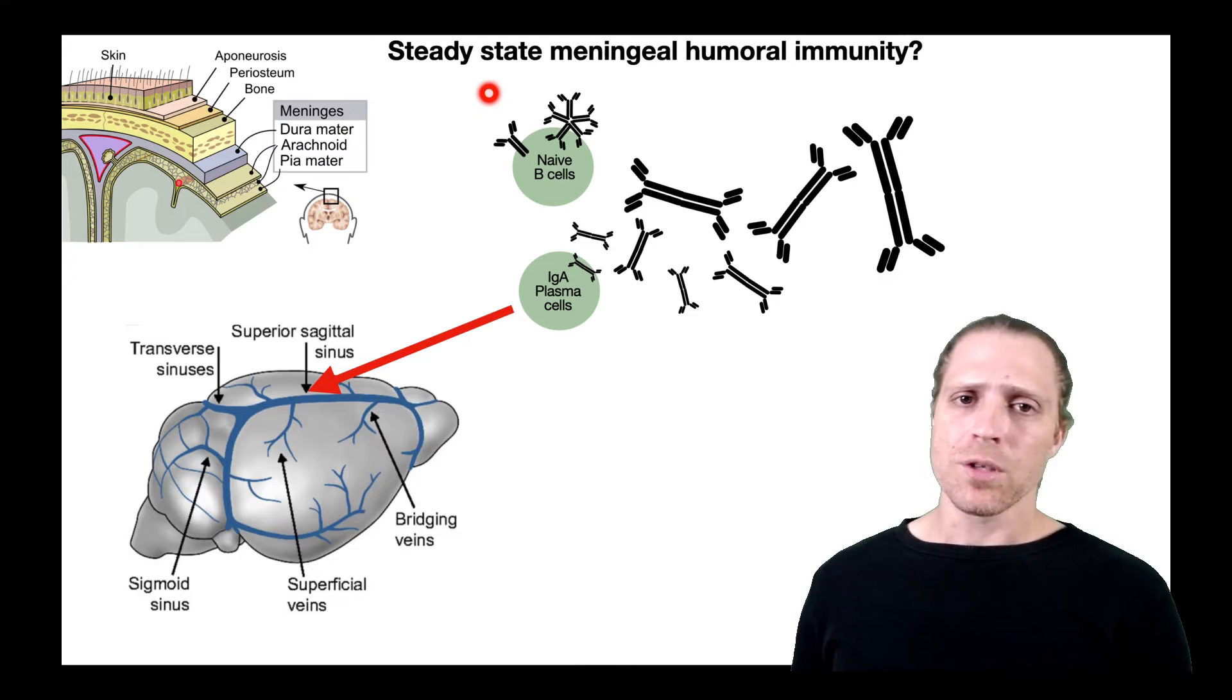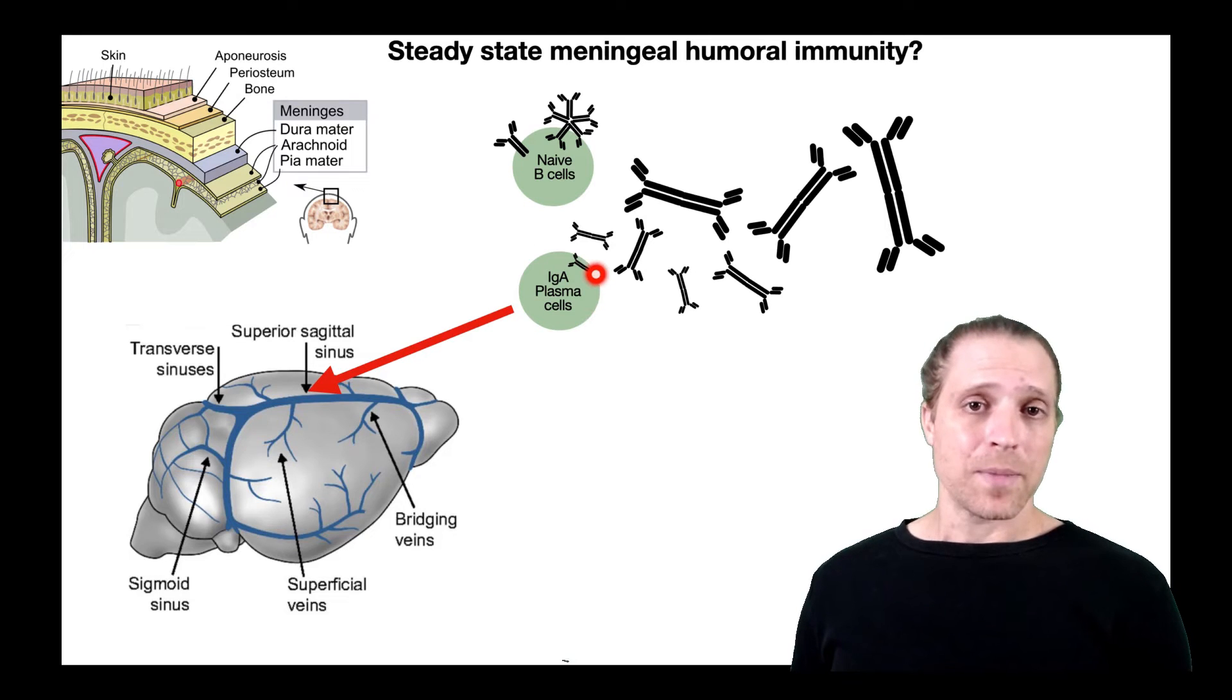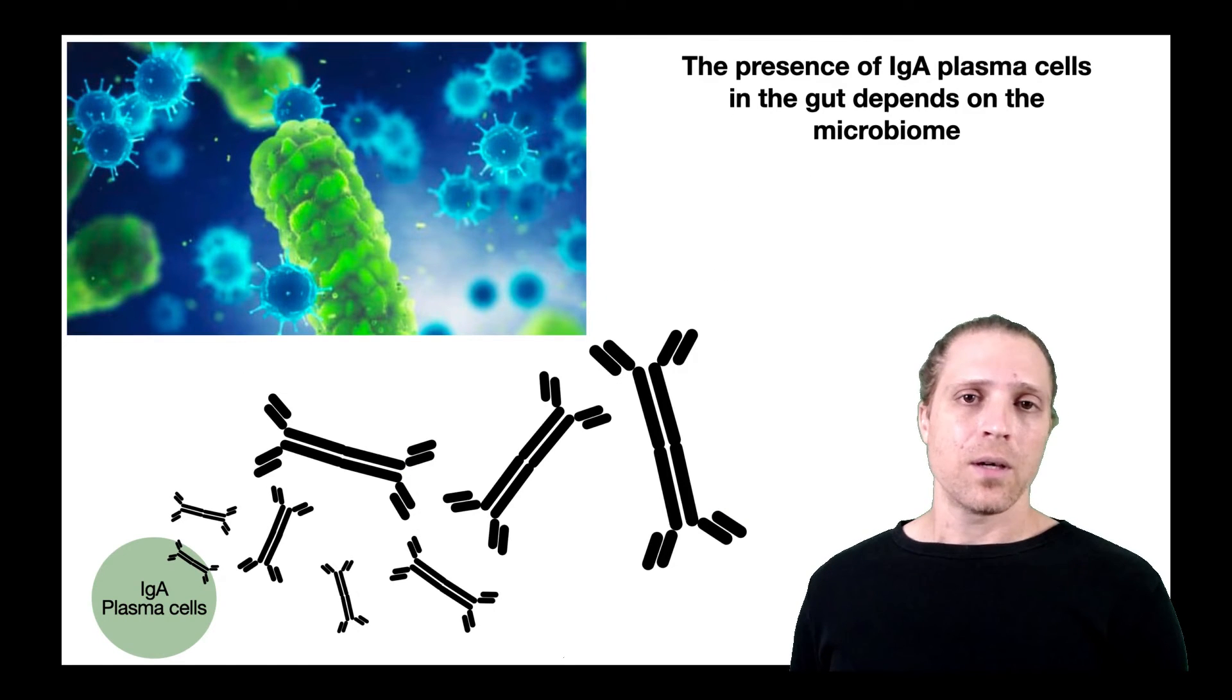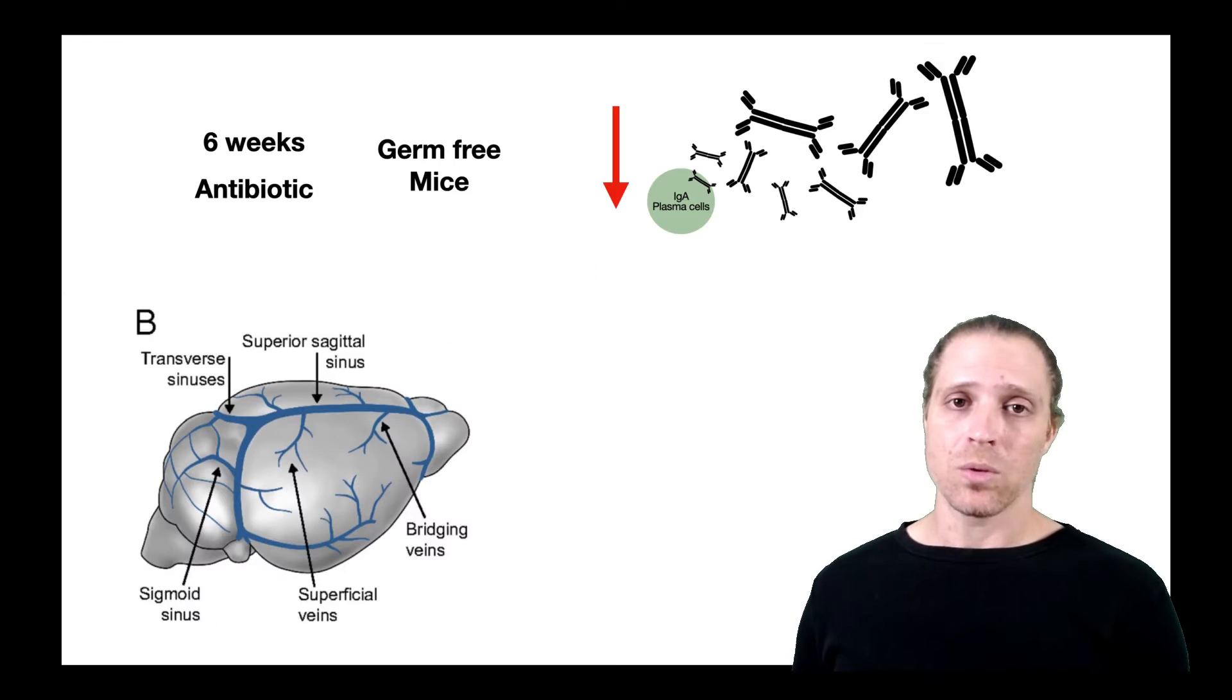And what the authors of this study found was that in blood vessels within the meninges, they saw the presence of naive B cells—so these are cells that mainly express IgM and IgD—as well as plasma cells that secrete IgA into the surrounding. And what the authors found was that the presence of IgA-secreting plasma cells in the meninges was dependent on the presence of microbes in the gut.